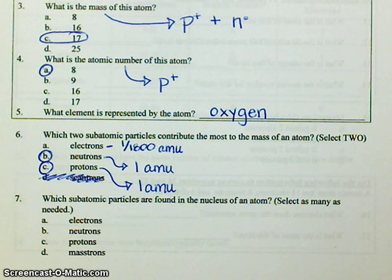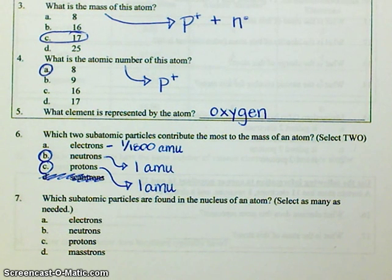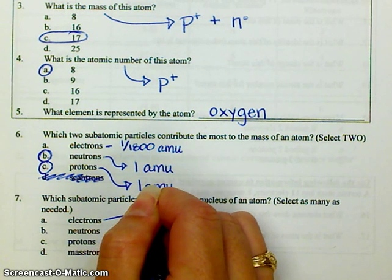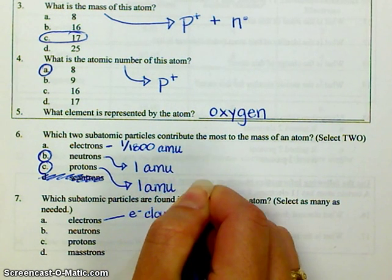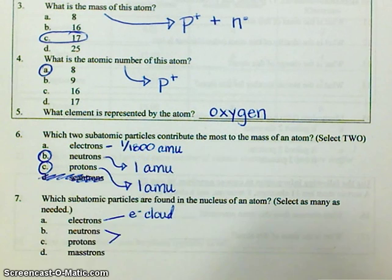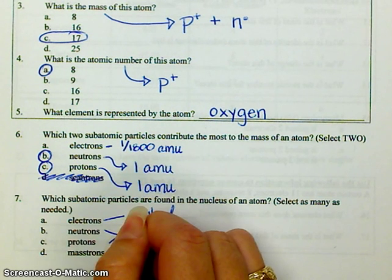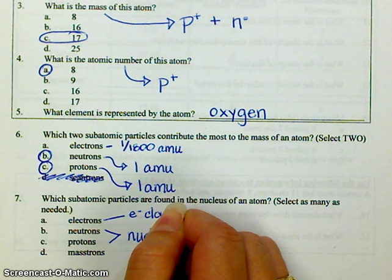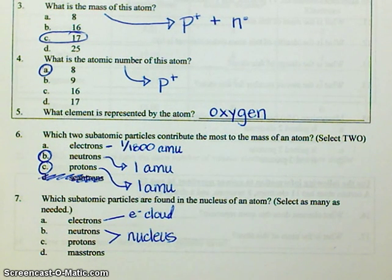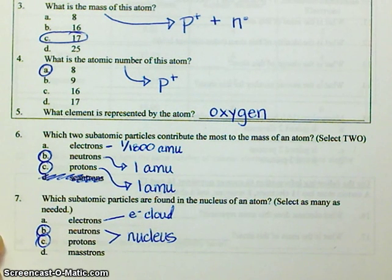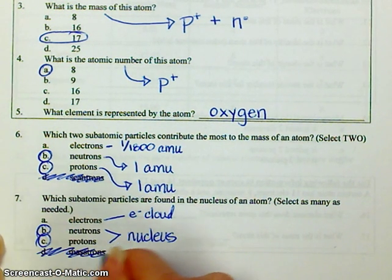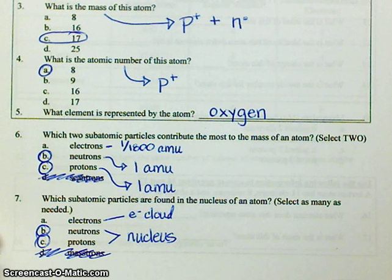Which subatomic particles are found in the nucleus of an atom? Electrons are found in the electron cloud. Neutrons and protons are both found in the nucleus, so you're going to pick B and C — protons and neutrons. 'Mass-trons' is just a nonsense word.